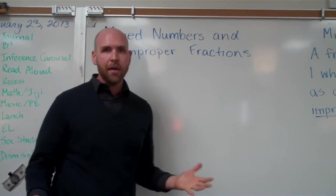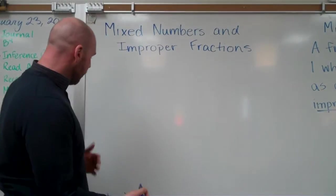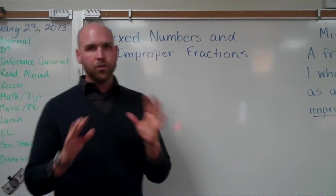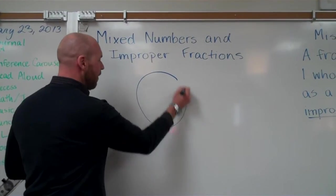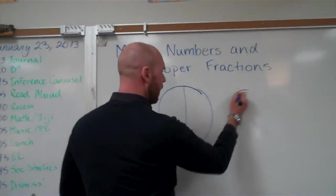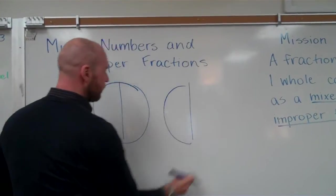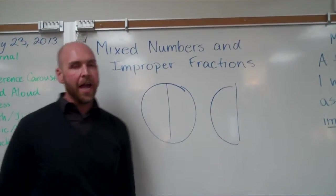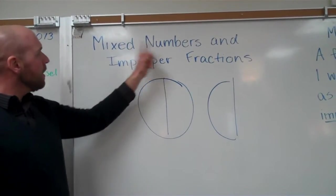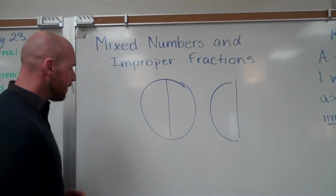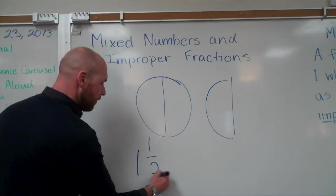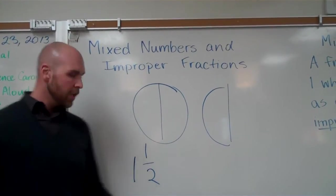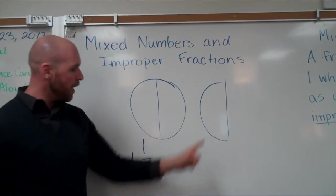And I'm going to give you kind of an example. I'll start with a picture. So let's take something super simple. Let's take halves for example. Let's say you have one whole and one half. Now in a mixed number, this would be represented as one and one half. Simple, right? We have one whole and one half.